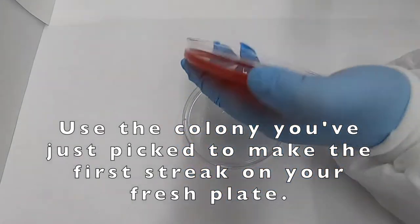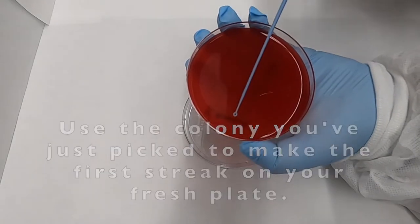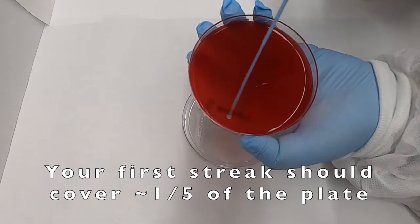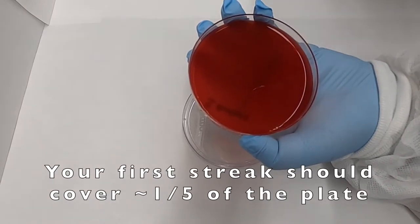We then use our loop with our single colony to make our primary streak on our blood agar plate, and this primary streak should comprise approximately one-fifth the total surface of the agar plate.